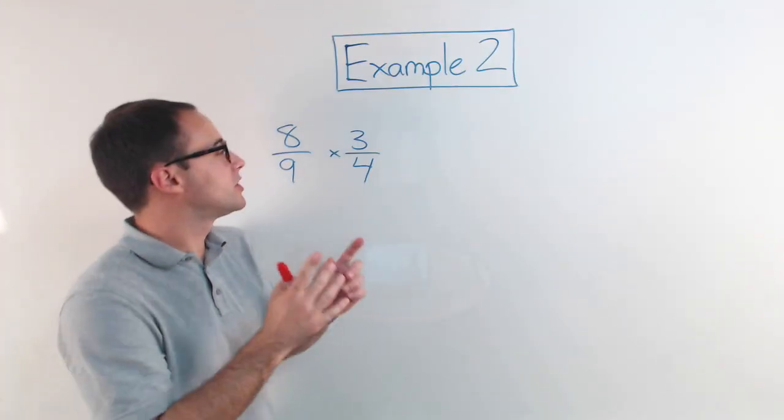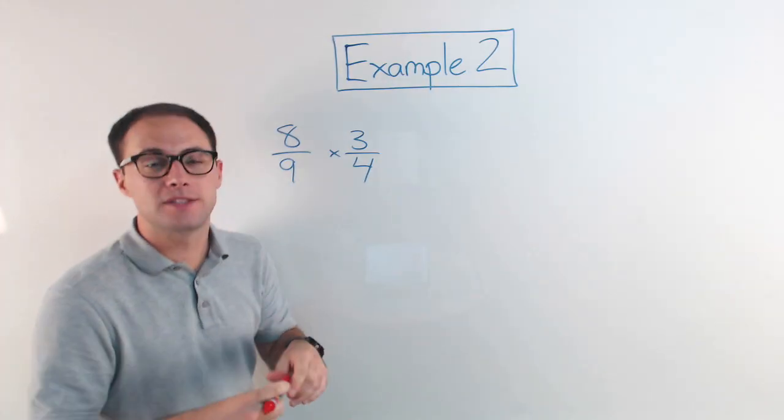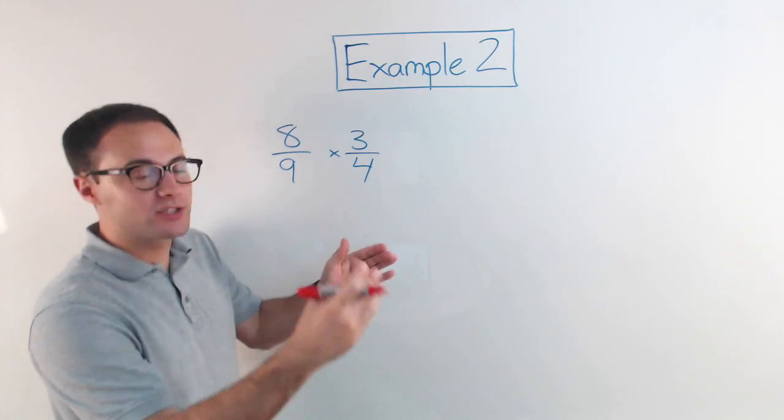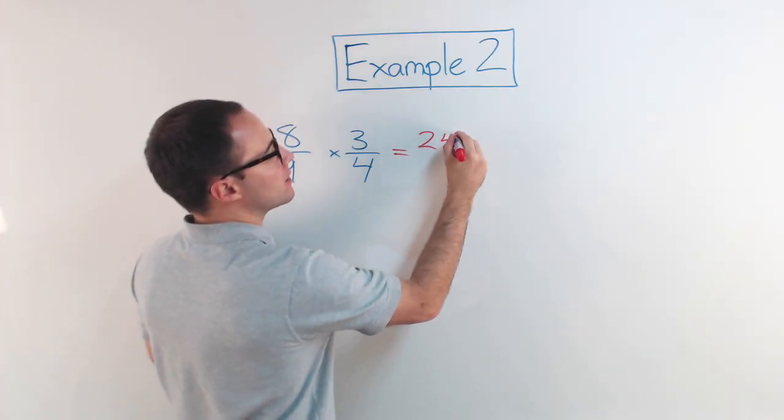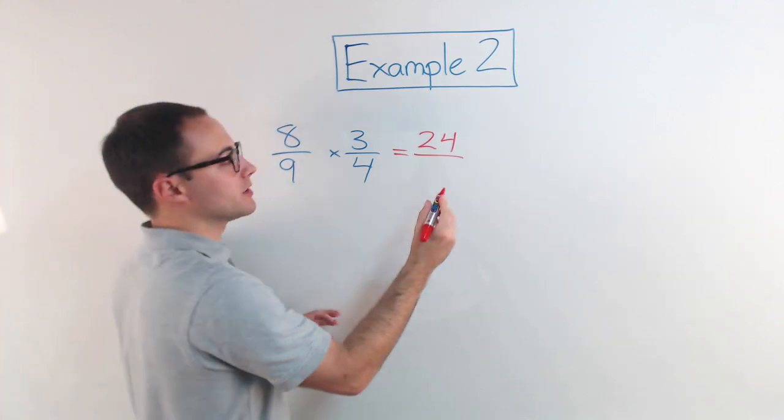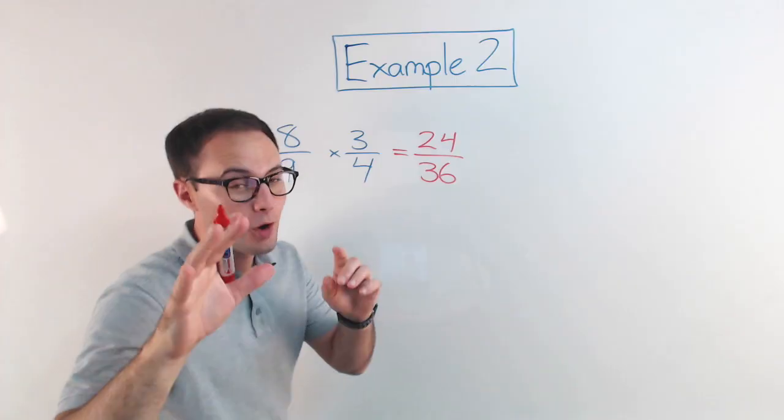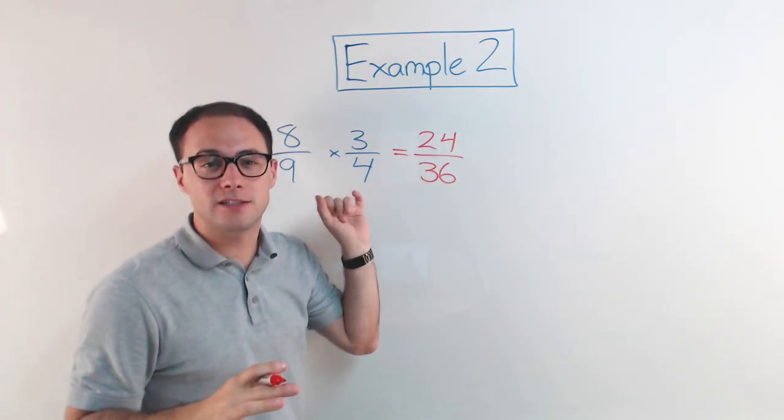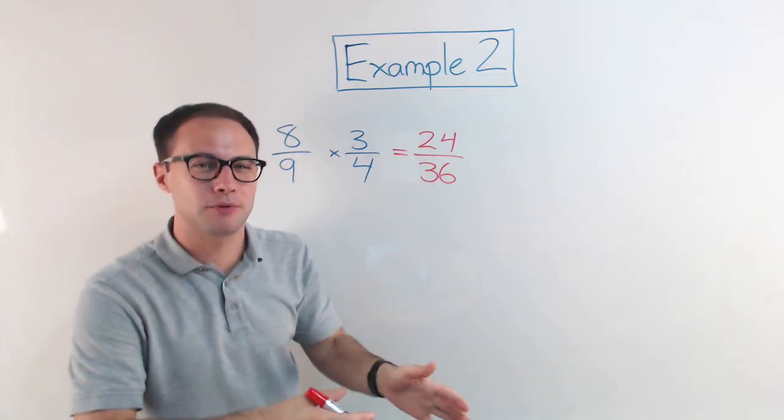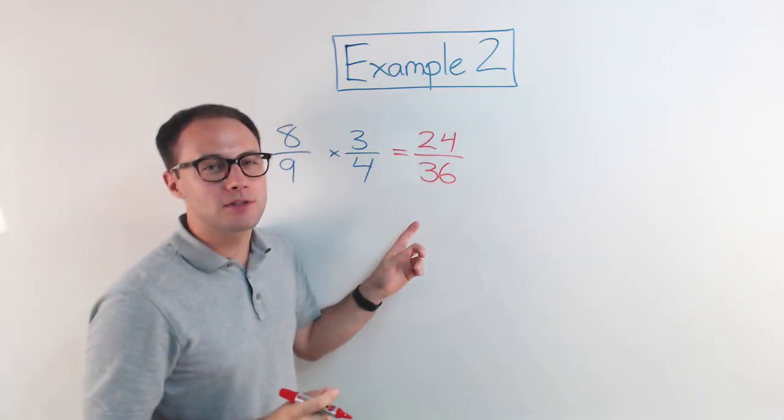All right here's example number two. Eight-ninths times three-fourths. So like we said before you can just multiply straight across. So if I do that, eight times three is twenty-four. Nine times four is thirty-six. Twenty-four over thirty-six. But hold on a second. I mentioned that when you deal with fractions you always want your answer in simplest form.